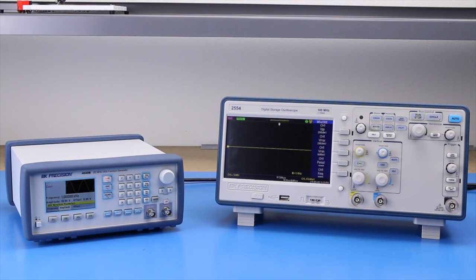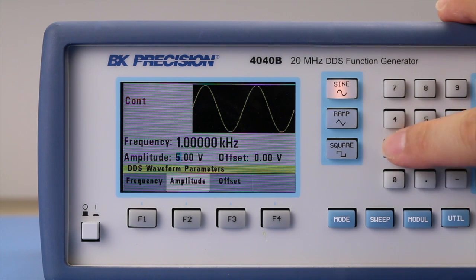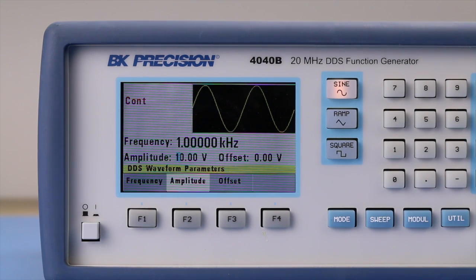Here we have a model 4040B 20 MHz function generator and a 2554 100 MHz oscilloscope. The sine wave output voltage is set to 10 volts on the generator.